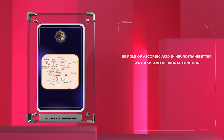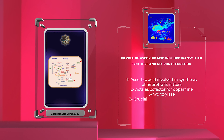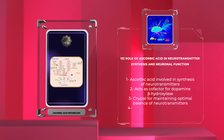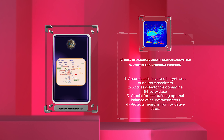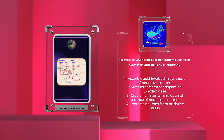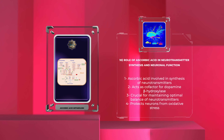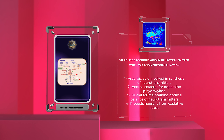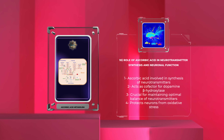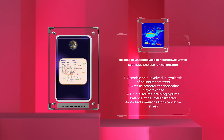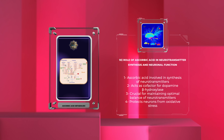Ascorbic acid is intimately involved in the synthesis of key neurotransmitters such as norepinephrine and dopamine. By acting as a cofactor for dopamine beta-hydroxylase, an enzyme responsible for the conversion of dopamine to norepinephrine, ascorbic acid helps regulate neurotransmitters that play crucial roles in modulating neuronal function, mood regulation, and cognitive processes.